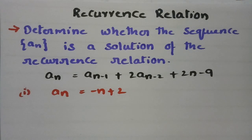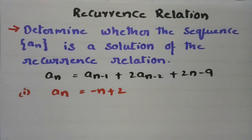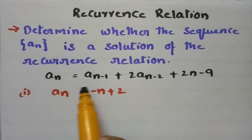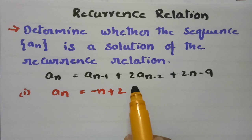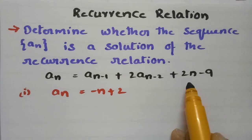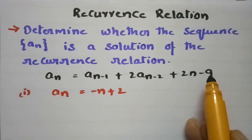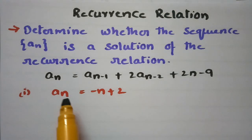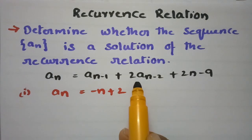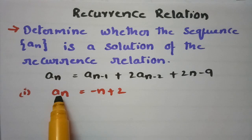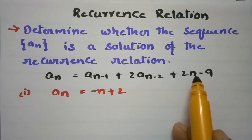In today's video I am going to discuss problems in recurrence relations. We need to determine whether the sequence An is a solution for the recurrence relation: An = An-1 + 2·An-2 + 2n - 9.